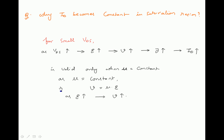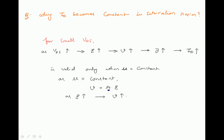However, all these things are valid only when mobility of charge carriers, mu, is constant. When mobility is constant, drift velocity V equals mu times electric field. Since mu is constant, V is directly proportional to electric field. As electric field increases, velocity increases, resulting in large current density and large current.